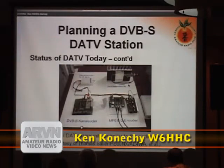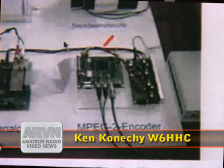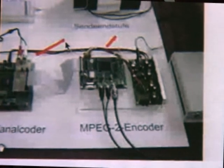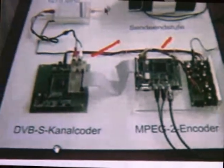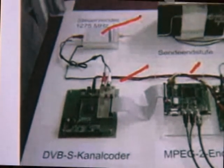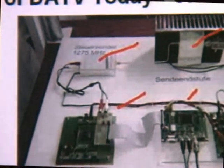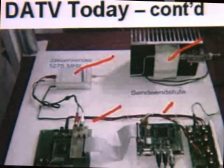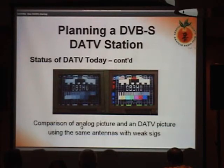Here's an early prototype out of Germany. This is the baseband processor. Here's the upconverter to 1.2 gigahertz, and here's the big power amplifier. Here's the comparison of what you get — same antennas, both sending and receiving, weak signals. You can see this is the analog, and here's the equivalent digital ATV, which is a great comparison picture.